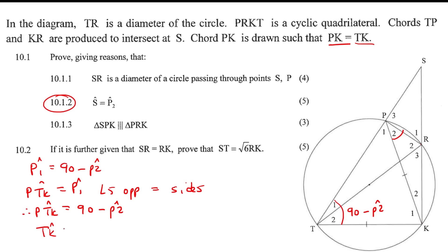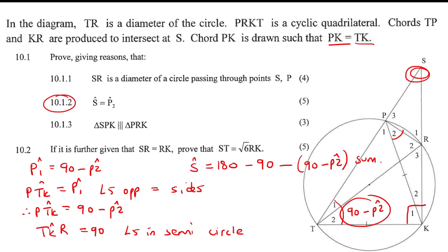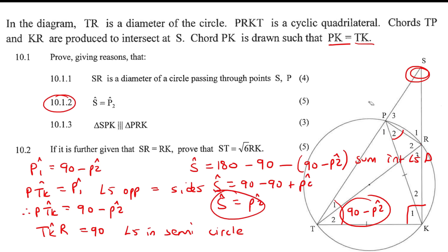So angle TKR is 90 degrees because of angles in a semicircle. Now looking at the entire triangle, angle S would just be 180 minus all of the other angles because of the sum of angles in a triangle. So 180 minus 90, which is angle TKR, minus the bracket 90 minus P2, which is angle PTK. That gives us 90 minus 90 plus angle P2, and the 90s cancel. So angle S is the same as P2.